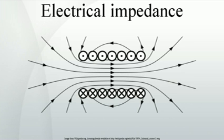Inductive reactance is proportional to the signal frequency and the inductance. An inductor consists of a coiled conductor. Faraday's law of electromagnetic induction gives the back EMF opposing current, due to a rate of change of magnetic flux density through a current loop. The back EMF is the source of the opposition to current flow. A constant direct current has a zero rate of change and sees an inductor as a short circuit. An alternating current has a time-averaged rate of change that is proportional to frequency; this causes the increase in inductive reactance with frequency.